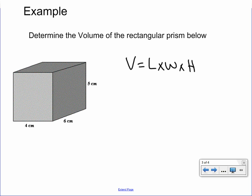Second step, what we want to do is plug in our numbers. So if we plug in our numbers here, I'll use the same color. Volume equals our length, which is four centimeters, times our width, which is six centimeters, times our height, which is five centimeters. Perfect. So that's our second point.